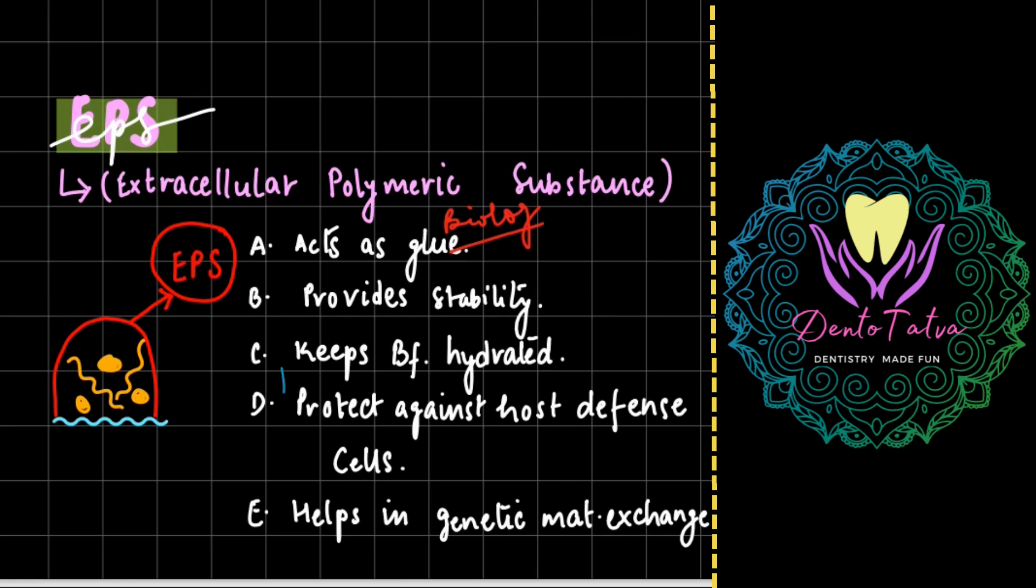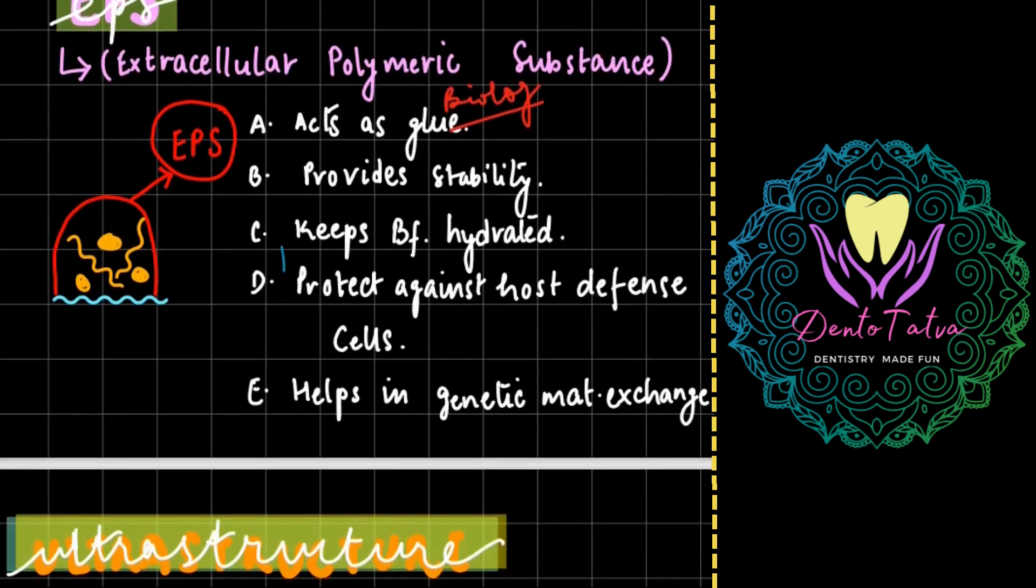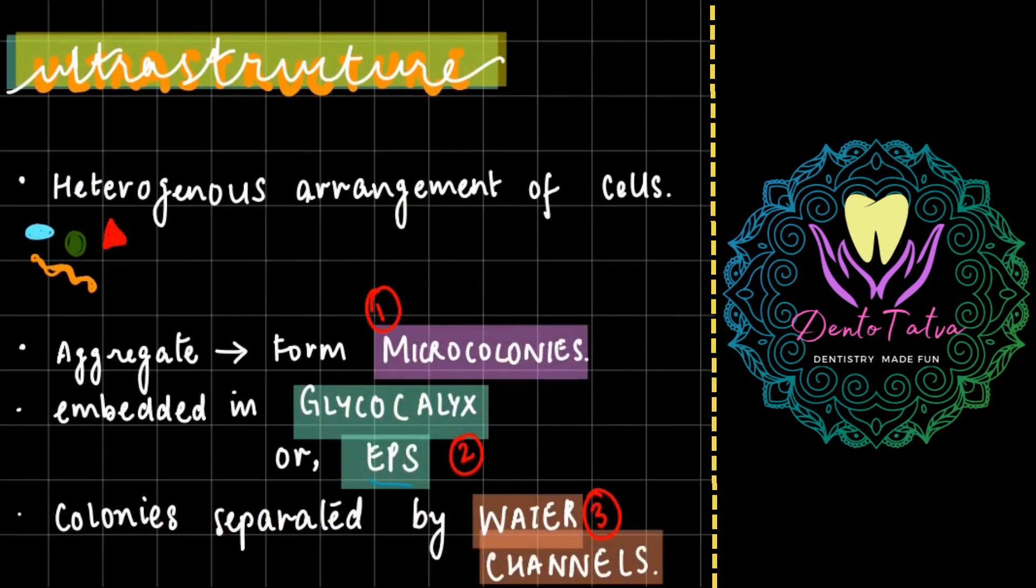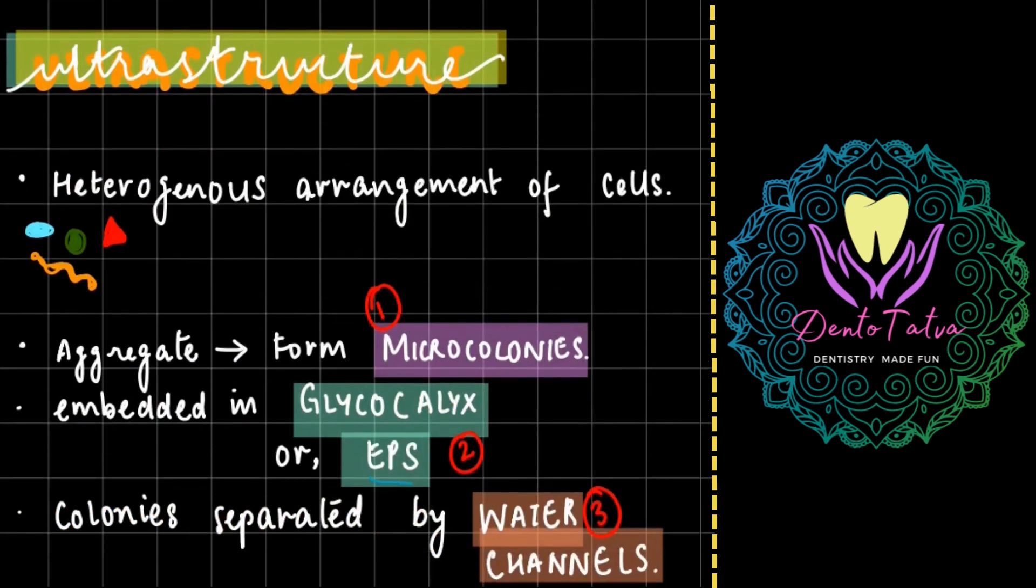So that there is no loss of attachment if there is any kind of environmental threat to the entire assembly, it is going to protect these cells against any kind of defense cells, and all of this is going to help in genetic material exchange. The ultrastructure is heterogeneous arrangement.